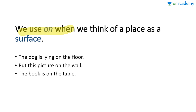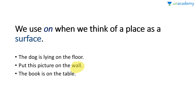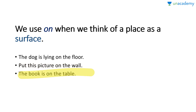We use 'on' when we think of a place as a surface. Connect the preposition 'on' with a surface and you will never be confused about where to use it. Examples: the dog is lying on the floor — imagine the floor as a surface. Put this picture on the wall — even though the wall stands erect, imagine it as a surface. The book is on the table — because the table is a surface.